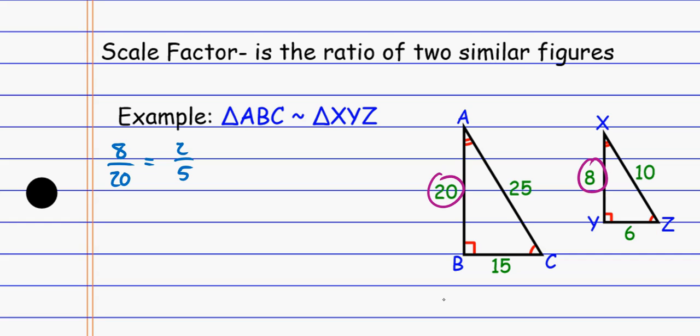But notice if I compare a different set of sides, let's say I compare the 15 and the 6 instead, compare it in the same way. I did small to big for the first one, so here we go. Small to big, that's 6 over 15. And once again, when I reduce that, that's 2 over 5.